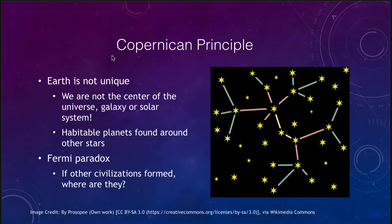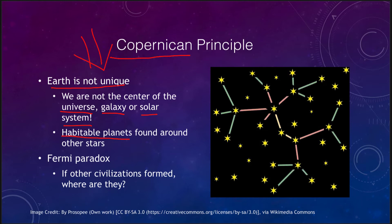One thing we sometimes talk about is what we call the Copernican principle, which means that the earth is not unique. It goes back to the time of Copernicus, who said that we were not the center of the solar system but that the sun was at the center instead. We're not the center of the solar system, not the center of the galaxy, not the center of the universe. So the Copernican principle is really saying that there are lots of habitable planets out there.